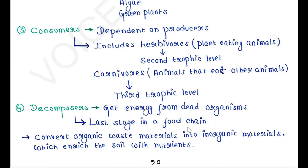Next are decomposers. They get energy from dead organisms and they are the last stage in the food chain. They convert organic waste materials into inorganic materials, which enrich the soil with nutrients.